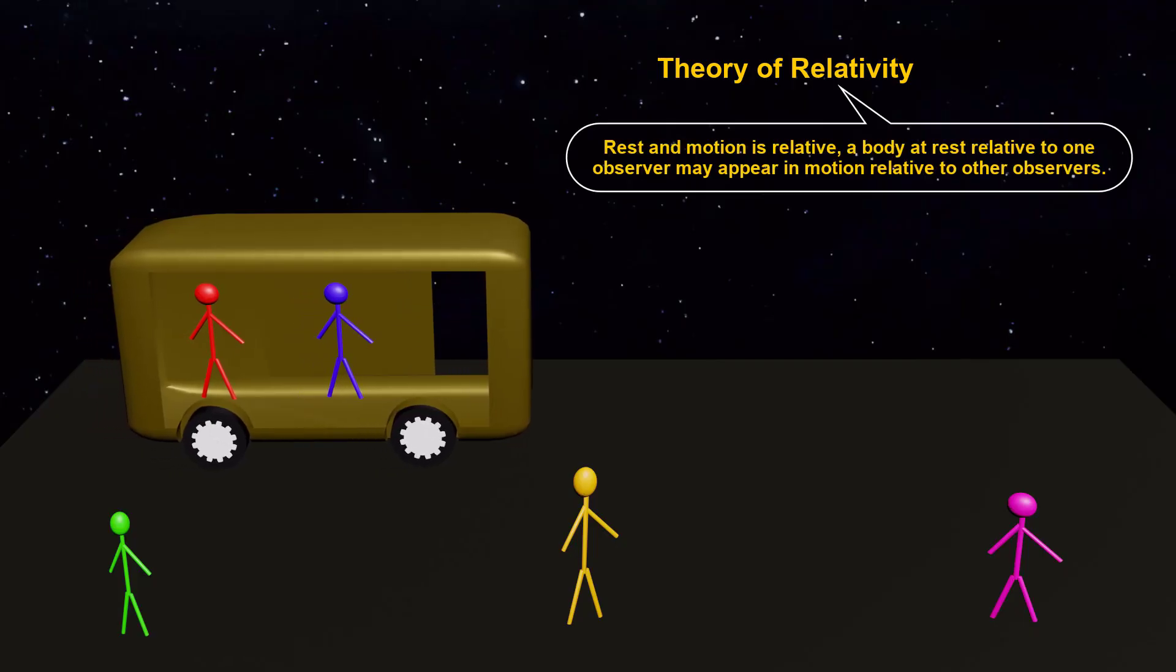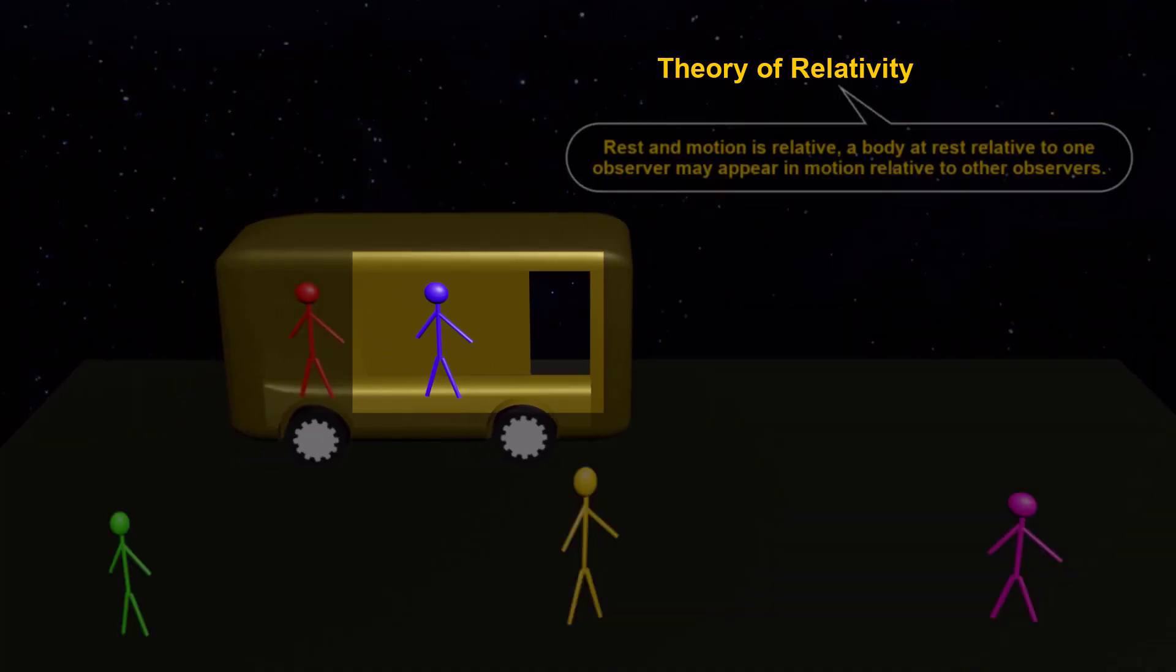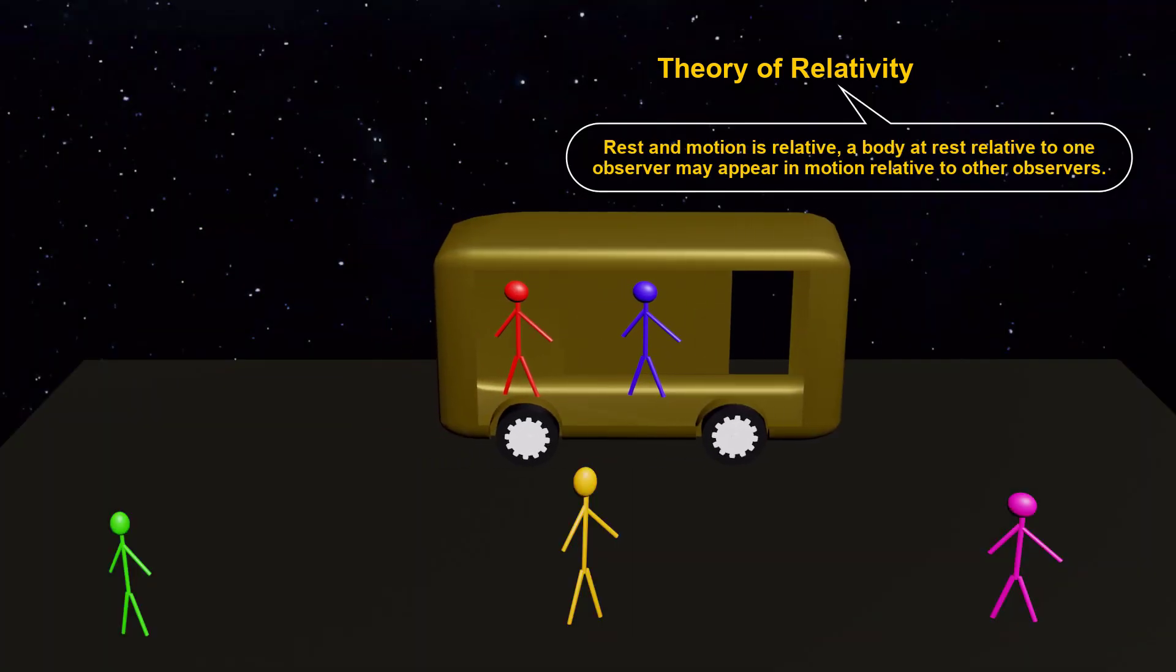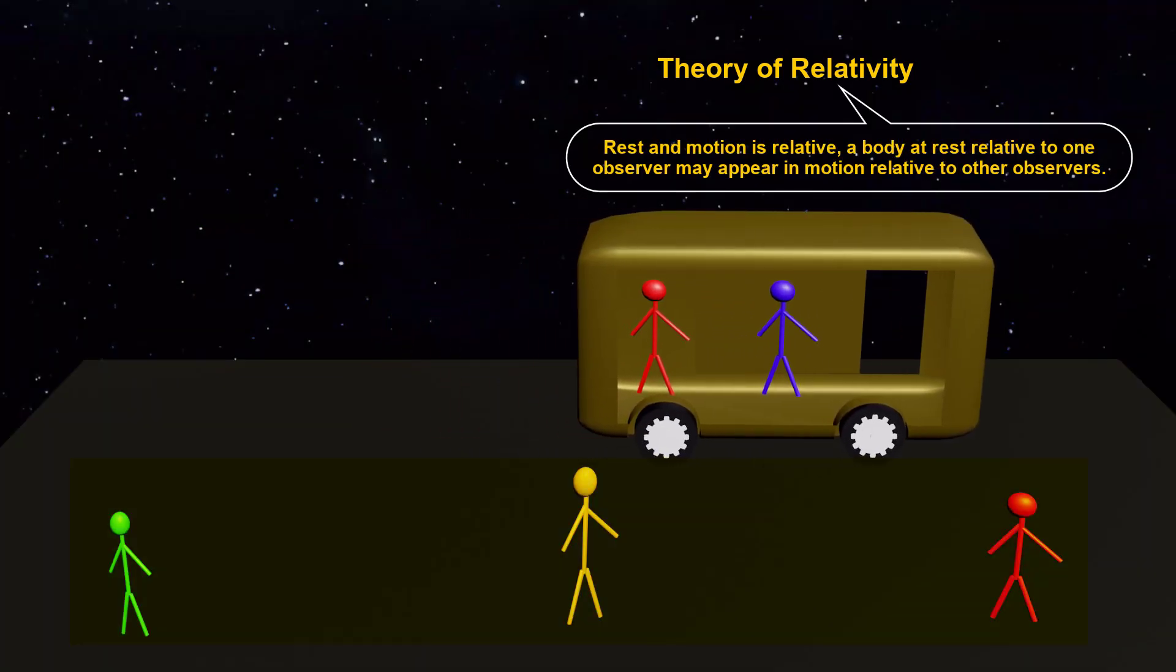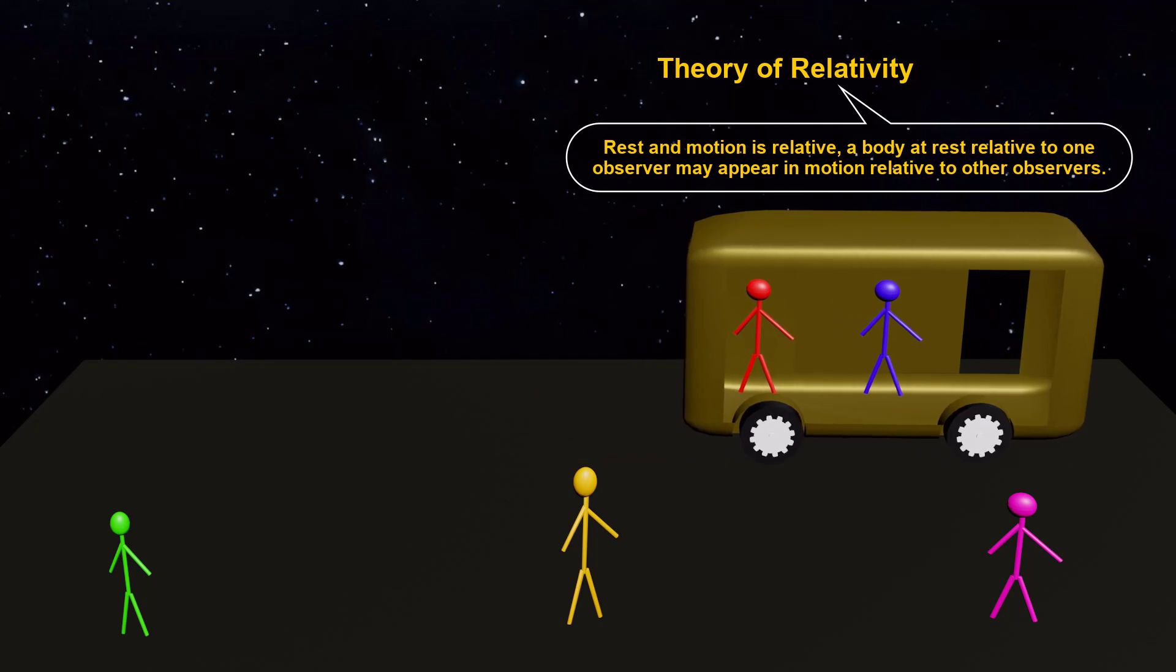The theory states that all motion is relative. A body at rest relative to one observer may appear in motion relative to other observers, and this is why we call it the theory of relativity.